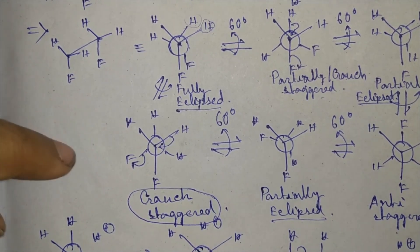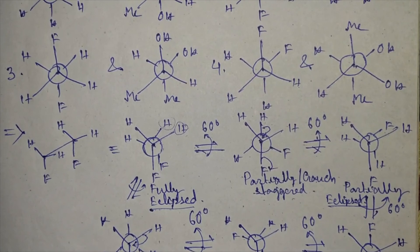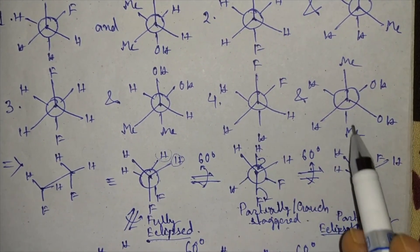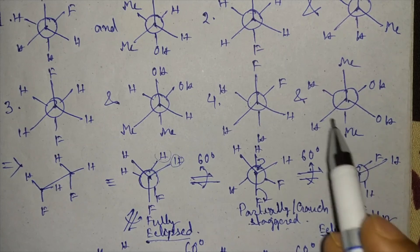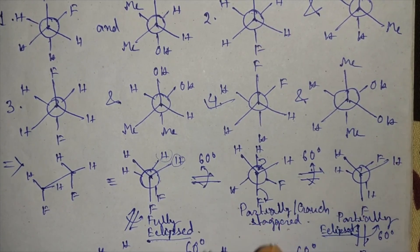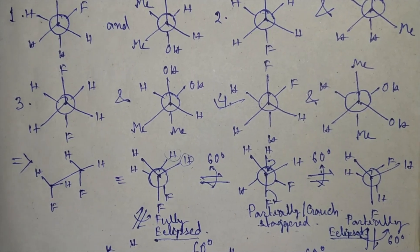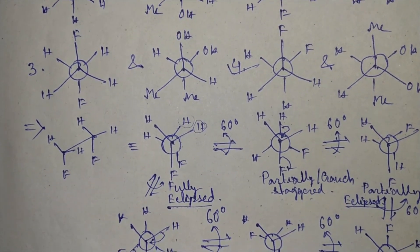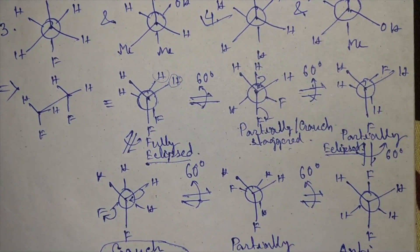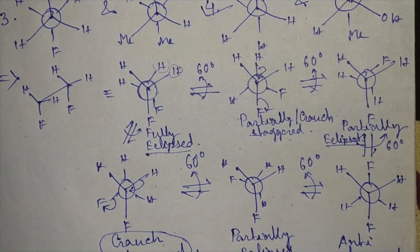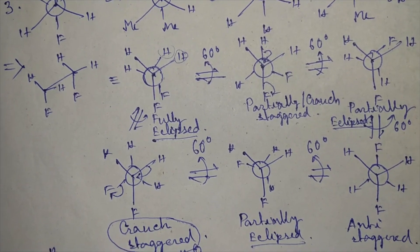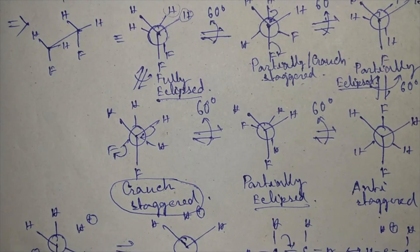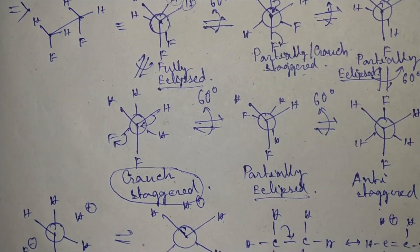Looking at the answer options, option number four shows a gauche staggered for 1,2-difluoroethane and an anti staggered for DL-2,3-butanediol, so this will be our answer. If you have any doubt regarding this, please let me know. Subscribe to my channel for such interesting videos. Thank you and have a good day.